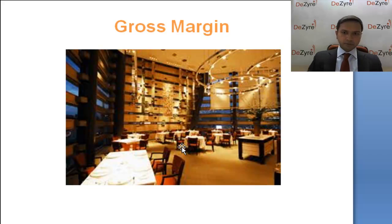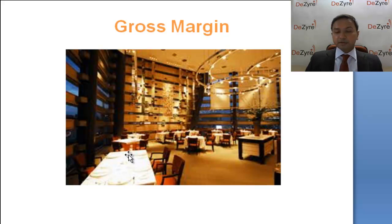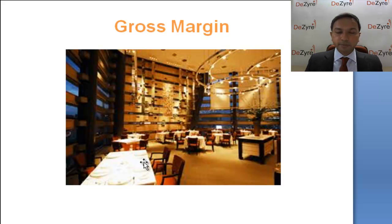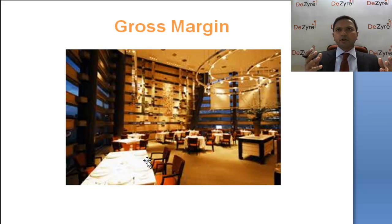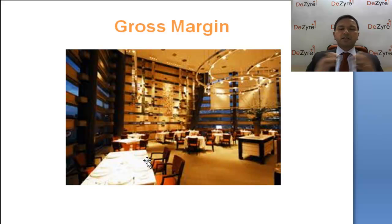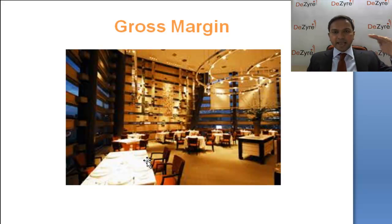Imagine going to a fancy restaurant with your parents and ordering paneer tikka. It looks really fancy, and the plate costs 600 rupees. Your mother sees the price and says, 'Imagine how much profit these people are making!' Her thought process: paneer costs maybe 50 rupees, tikka masala and oil another 50 rupees — so 100 rupees to make it. Why are they charging 500 rupees extra? Her expense calculation is stopping at gross margin — just the cost of the ingredients.